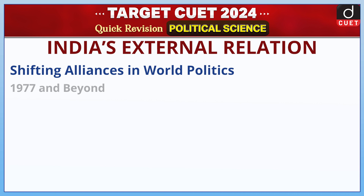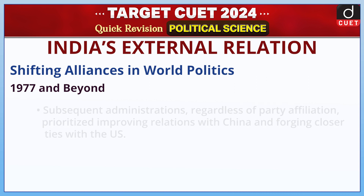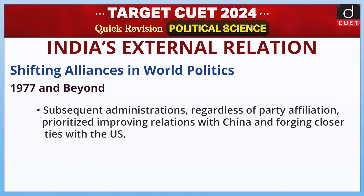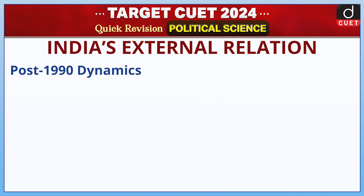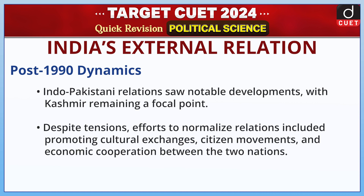Shifting Alliances in World Politics — 1977 and Beyond: Non-Congress governments rose to power from 1977 onwards, coinciding with significant shifts in global politics. The Janata Party government pledged genuine non-alignment, aiming to correct a perceived pro-Soviet bias. Subsequent administrations, regardless of party affiliation, prioritized improving relations with China and forging closer ties with the US. Post-1990, criticism of pro-US foreign policies became common. With Russia's diminished global influence, India leaned towards a more pro-US stance, aligning with evolving economic interests over military considerations. Indo-Pakistani relations saw notable developments with Kashmir remaining a focal point; efforts to normalize relations included promoting cultural exchanges, citizen movements, and economic cooperation.